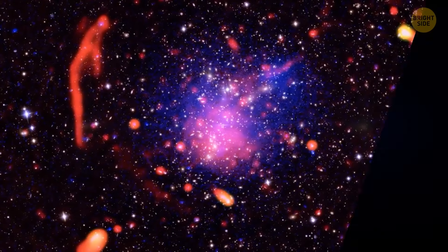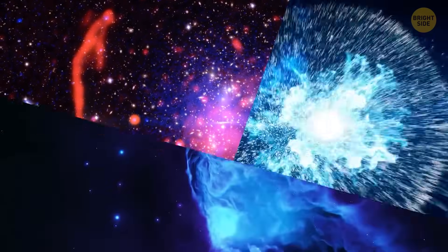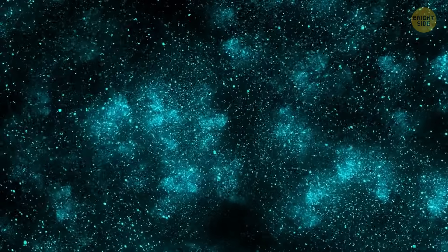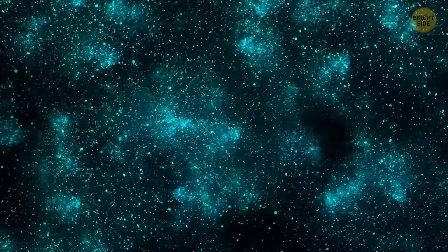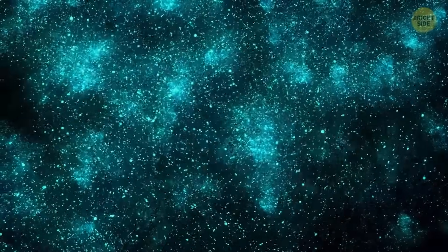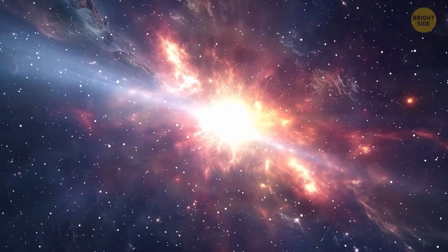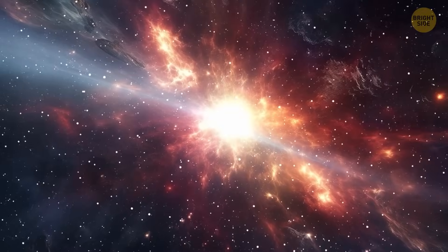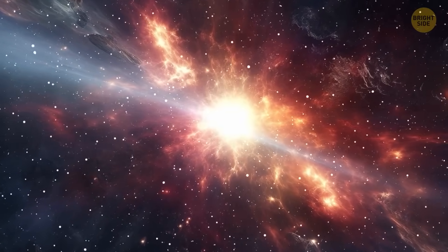Star formation, supernova explosions, and gas movement all work together to shape the Milky Way. The hot gas not only helps regulate star formation but also redistributes materials created inside stars. Elements produced in stellar cores are spread throughout the galaxy by supernovae, becoming the building blocks for future generations of stars.